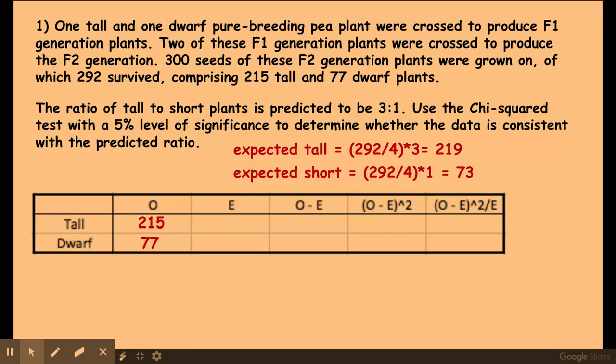So these are the observed values taken directly from the question, and these are my expected that I've just calculated. I do my observed take expected and then I square those values. Now when I square a negative, don't forget a negative times a negative becomes positive.